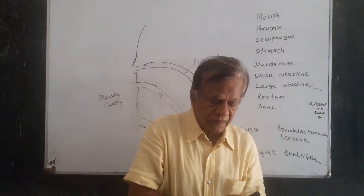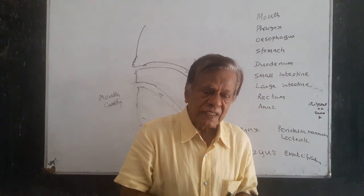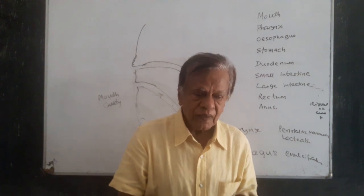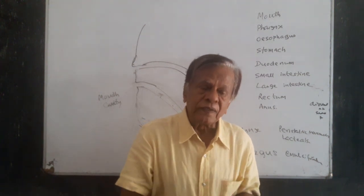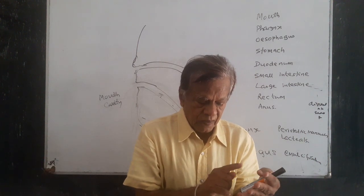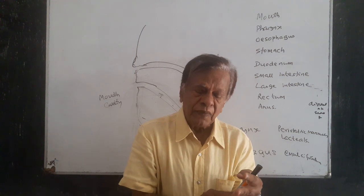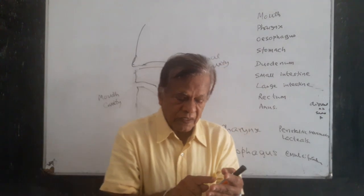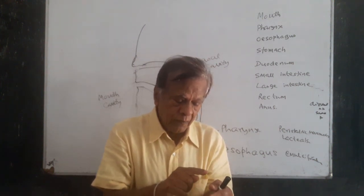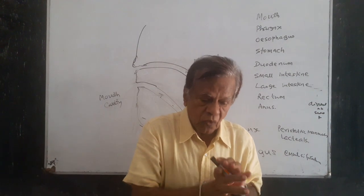Grade 11 Science, Unit 6: Human Body Systems. In this unit, you have to study the Digestive System, Respiratory System, Excretory System, Nervous System, and Blood Circulatory System. We have to study all these systems.